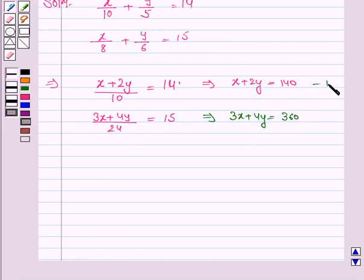Let us name this as equation 1 and this as equation 2. Now we will solve equations 1 and 2 by equating the coefficients. Here we will equate the coefficient of y. To equate the coefficient of y, we need to multiply equation 1 by 2 to make it 4.